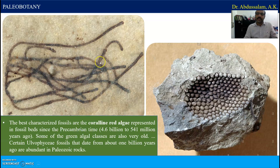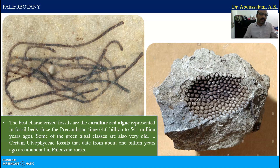Some of the most common and popular examples of fossil algae are discussed here. The best characterized fossils are the coralline red algae, represented in fossil beds since the Precambrian time — 4.6 billion to 541 million years ago. Some of the green algal classes are also very old; for certain Ulvophyceae, that is Ulva, the world's categories are attached.